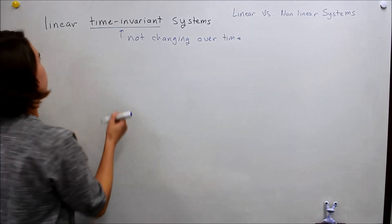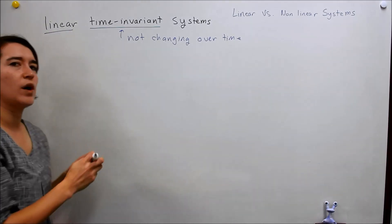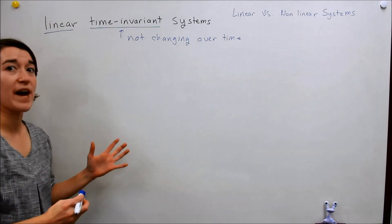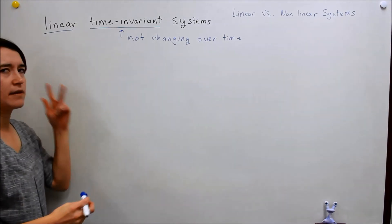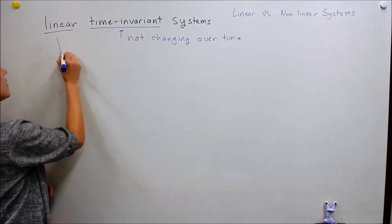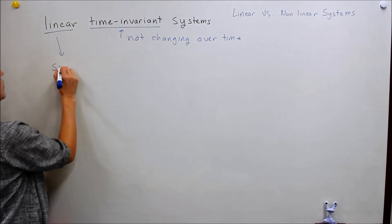What about the linear part? What does linear mean? Well, if we go by the mathematical definition, it means two things. It means the system has to follow superposition.